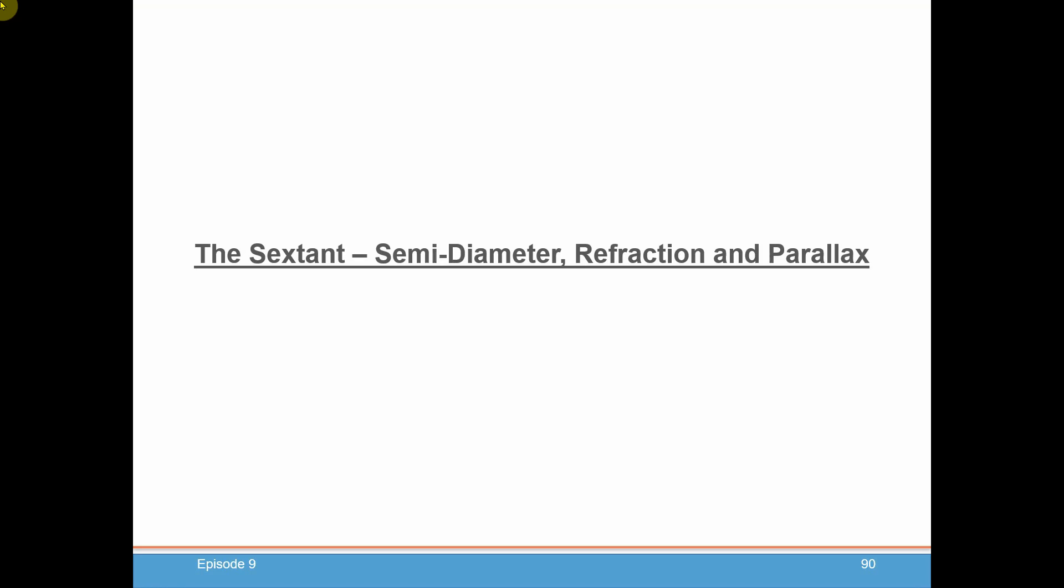Hello, I'm John Pinto, and I'm presenting Dominique Pernet's course on celestial navigation. In today's episode, we're going to be talking about the sextant and some more corrections you need to make to its reading. We'll be talking about semi-diameter, refraction, and parallax.